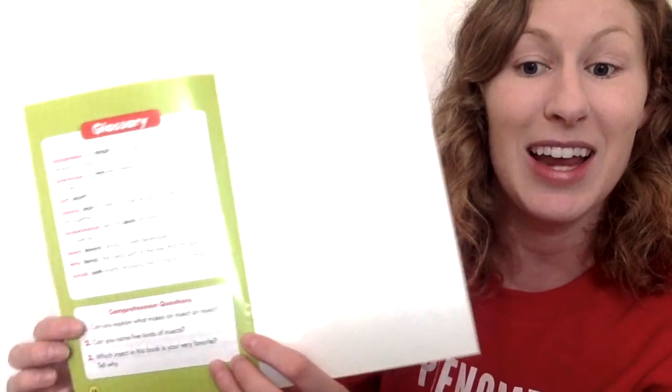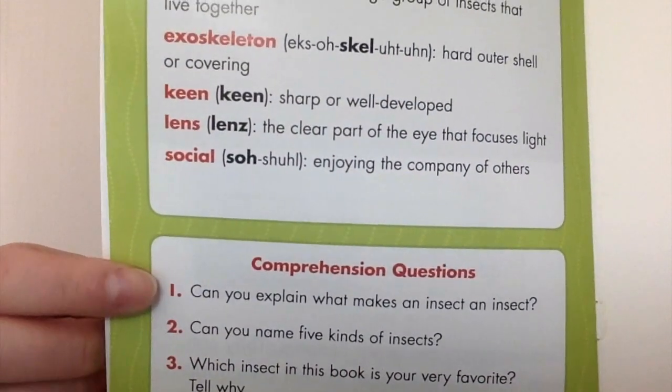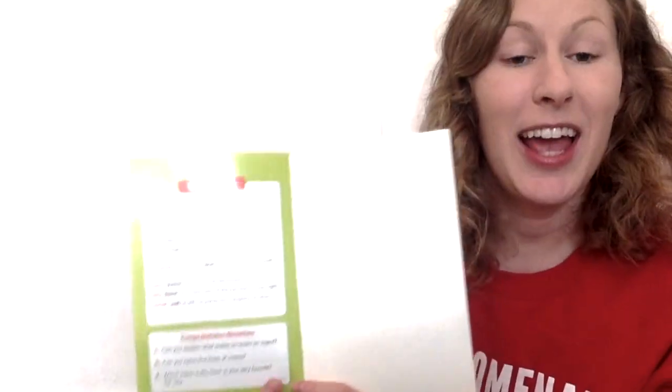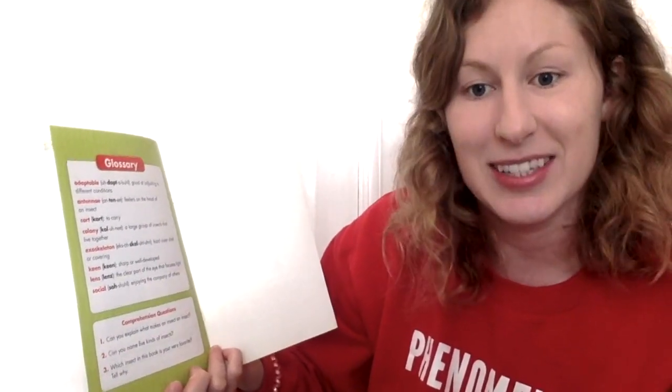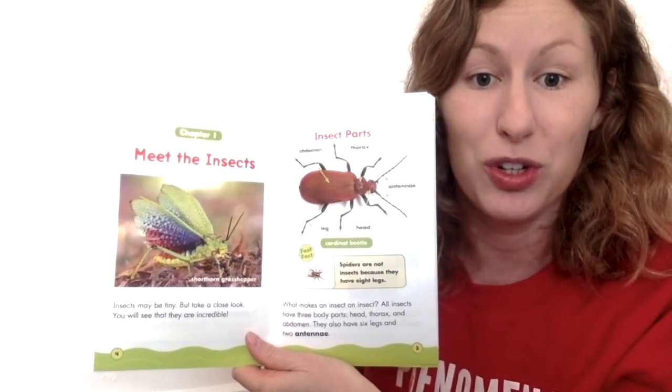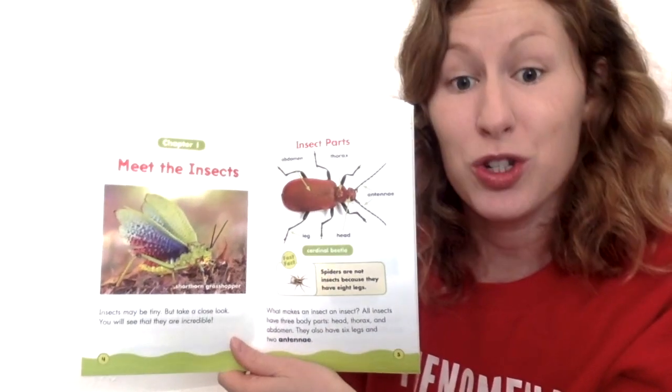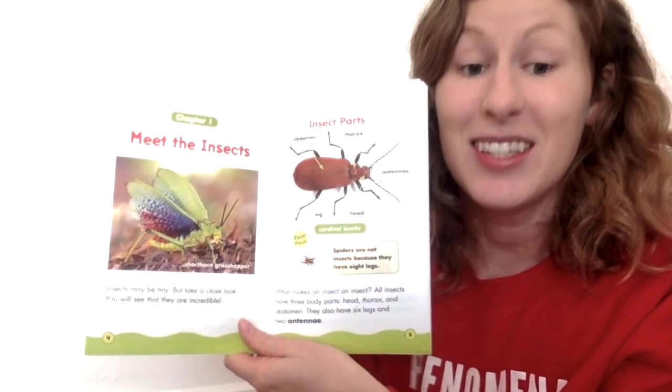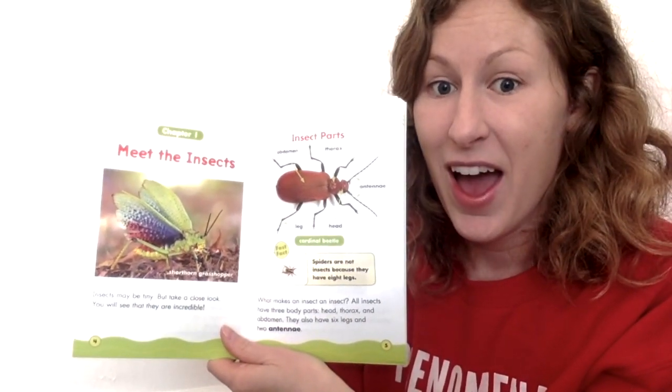Now if you have a paper and pencil, this would be a great time to grab it. You can write down the answer to your questions and then send them in a picture message to Ms. Brandenburg. The first comprehension question: can you explain what makes an insect an insect? Do you remember the first chapter where it says Meet the Insects? It told us facts about insects that make them special. Here's a hint: spiders are not insects because they have eight legs. Insects only have six legs.